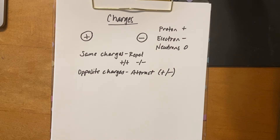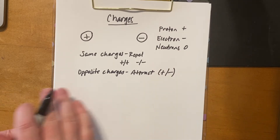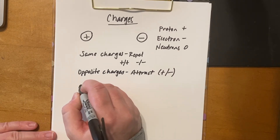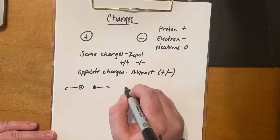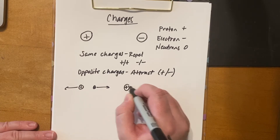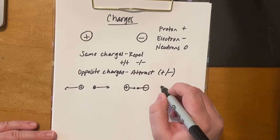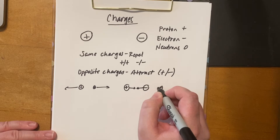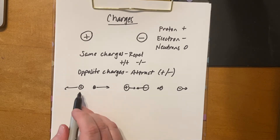The repulsion or attraction is driven by the sign of the charges, not the strength. The strength of the charges helps us figure out the actual force. Depending on how big the charges are, we can figure out how much force is actually acting between the two charges present.